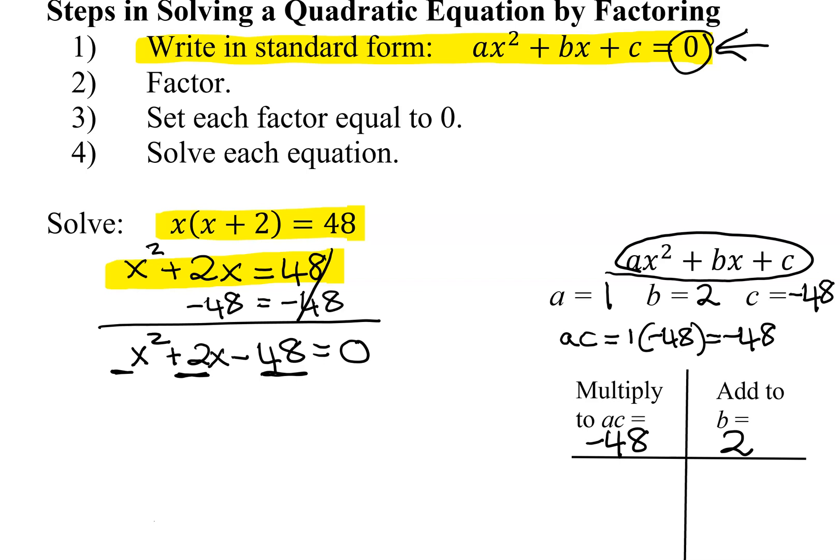Hopefully these numbers come to you quickly, but if not, I'm just going to work through it systematically. I need 2 numbers that multiply to a negative. That means the signs are opposite, and add to a positive. The bigger one has to be positive. So I can start off initially with negative 1 times 48.